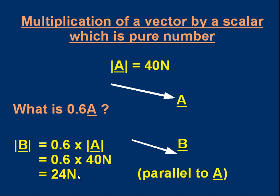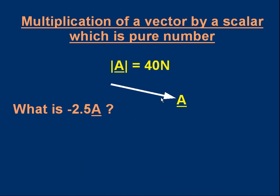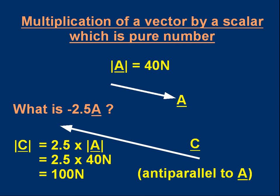Let's do another one. Same vector a, magnitude 40 newtons. This time I'm going to multiply a by minus 2.5. The answer is a new vector, which I've called c — so multiplying a by minus 2.5 gives a new vector c.